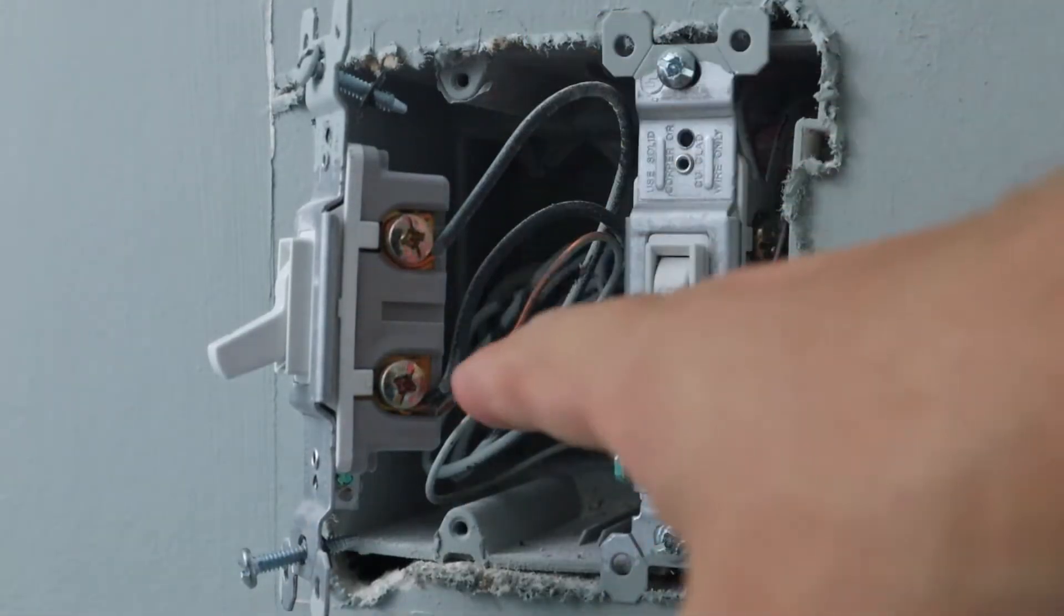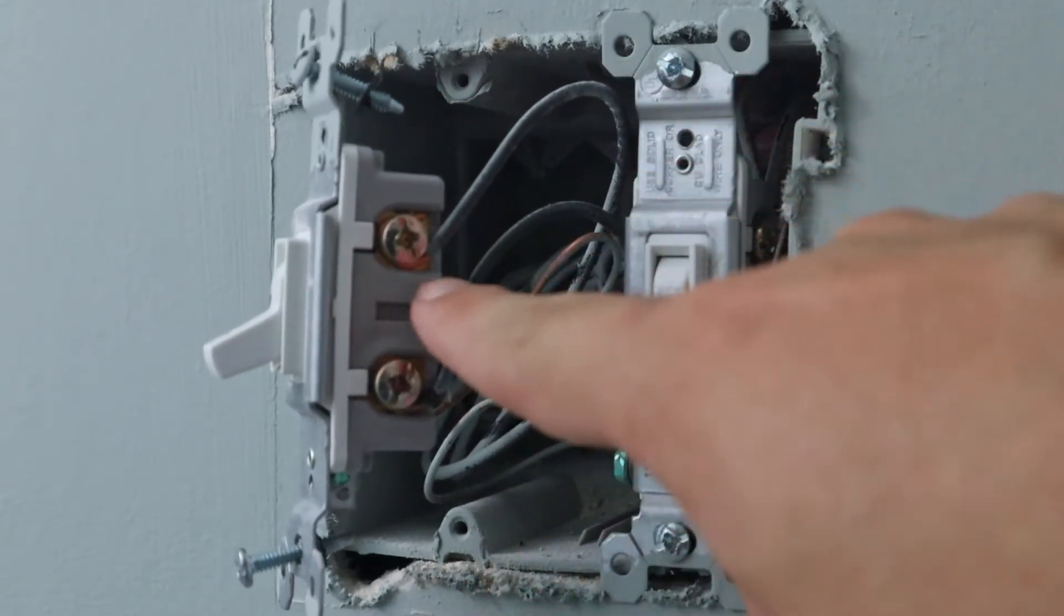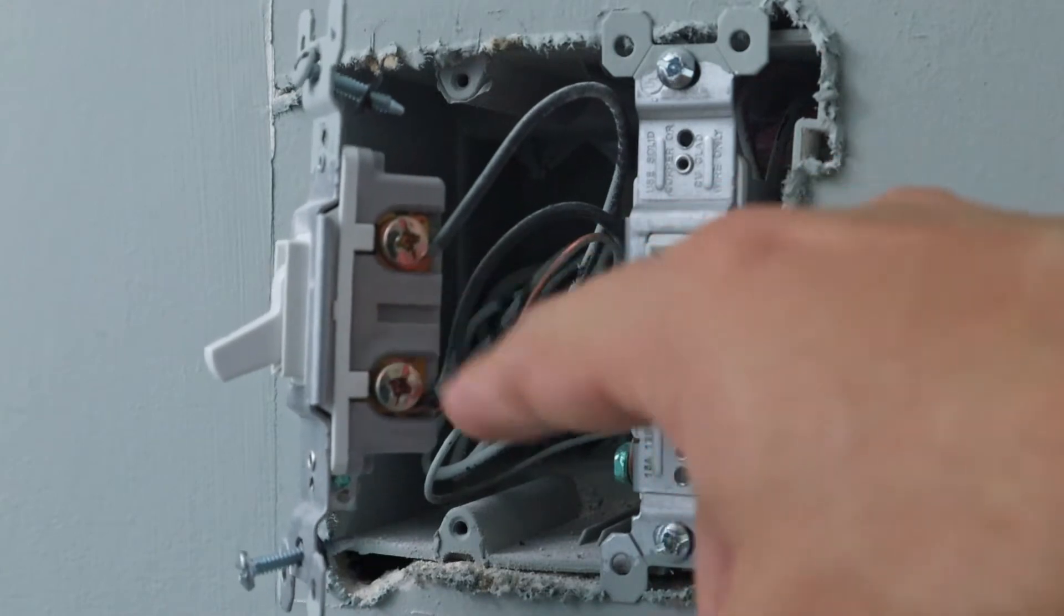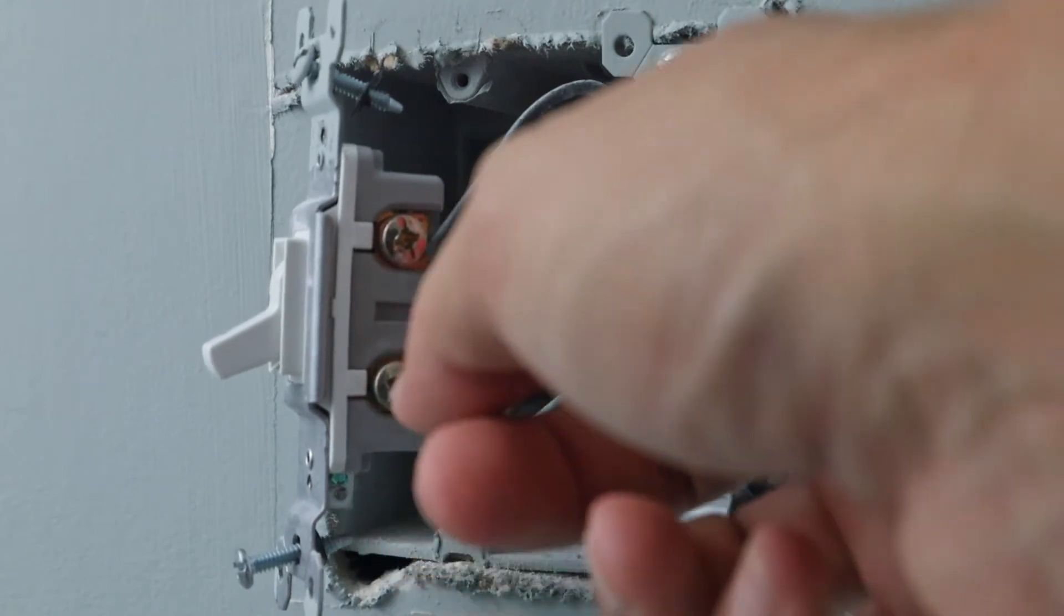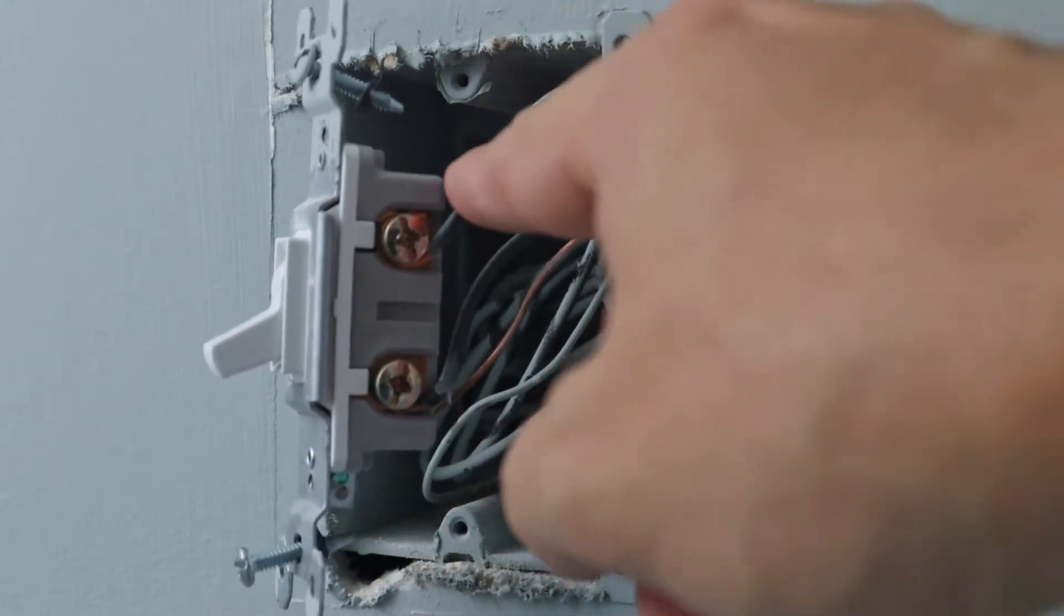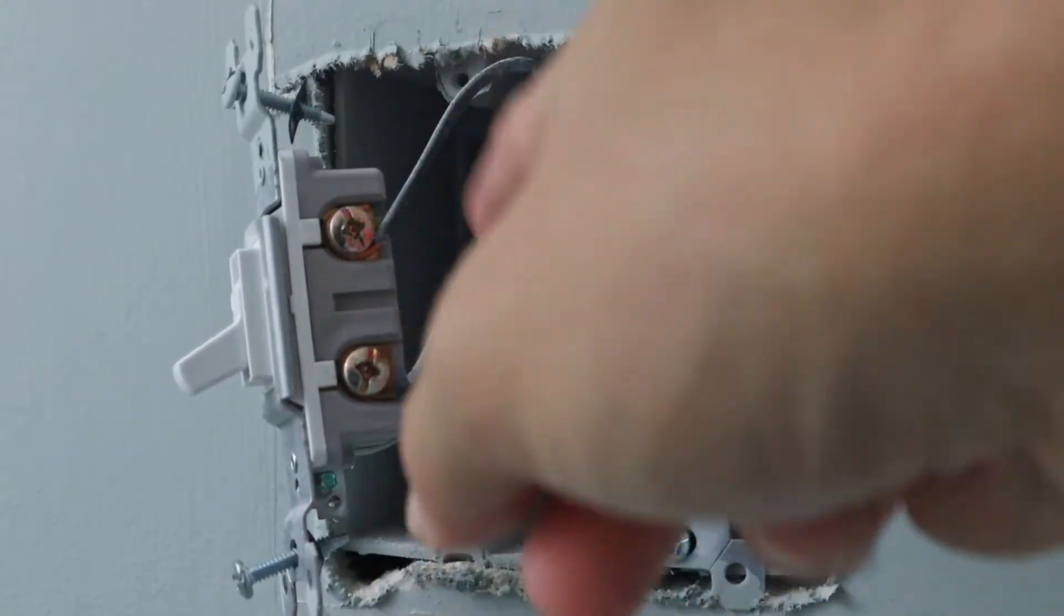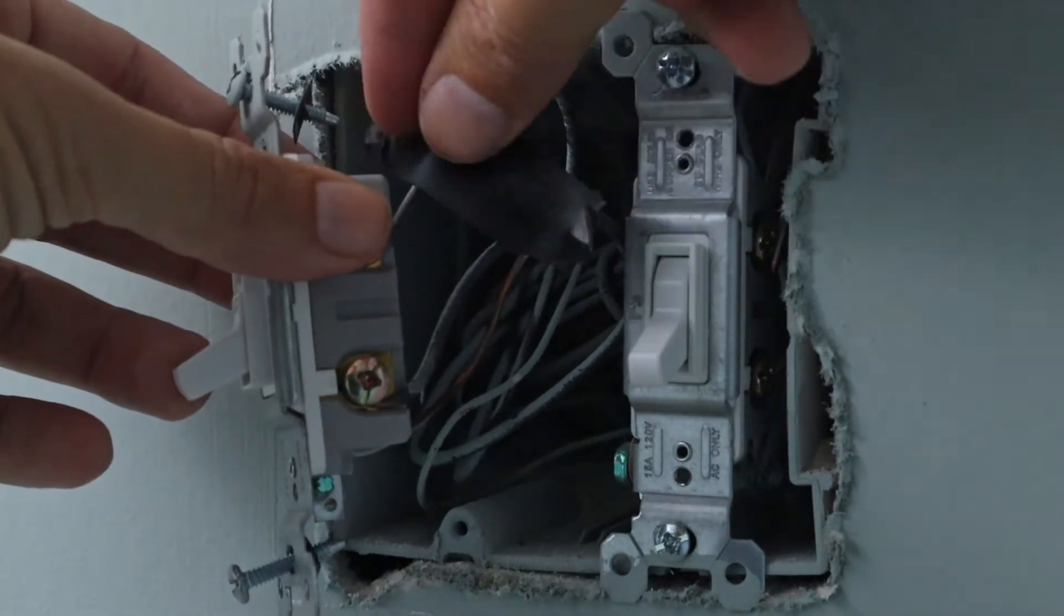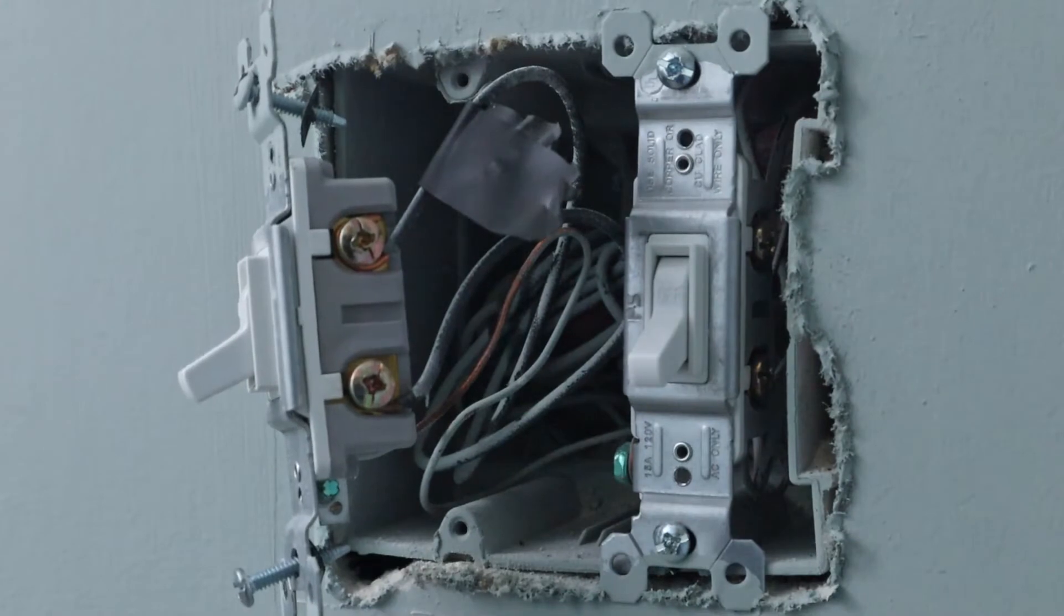You remember I said we need to figure out which one of these is our line and our load. I said that this top one here was our line wire, which would be the power being brought in from the main panel. The load wire is what, when you flip the switch, makes the connection and sends the electricity to the fan. What I like to do is once I've located my line wire, in order to tell the difference between these two black wires so they don't get mixed up, I just take a piece of electrical tape and put it around my line wire so I don't get them mixed up when I go to put them into the new switch.